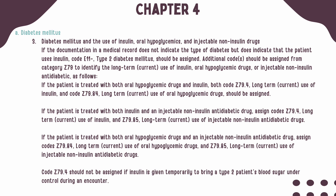If the documentation does not indicate the type of diabetes and there is a use of insulin, two codes should be used. A code from category E11 for type 2 diabetes should be appended first, followed by code Z79.4 for the long-term use of insulin. If the patient is treated with both insulin and oral hypoglycemic drugs, such as metformin, both Z79.4 and Z79.84 should be used.